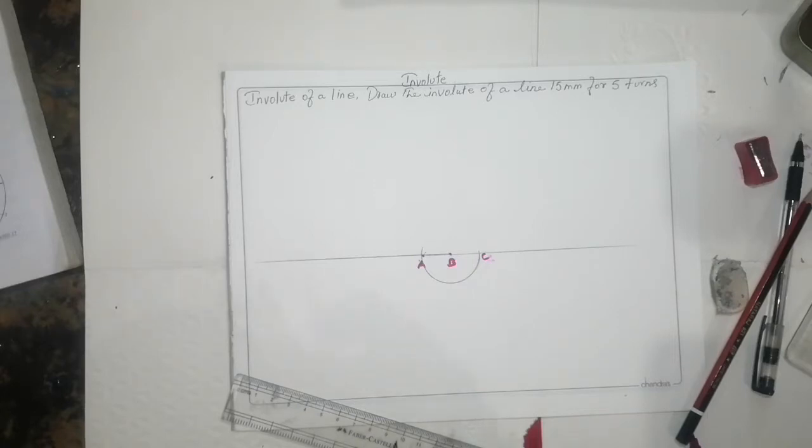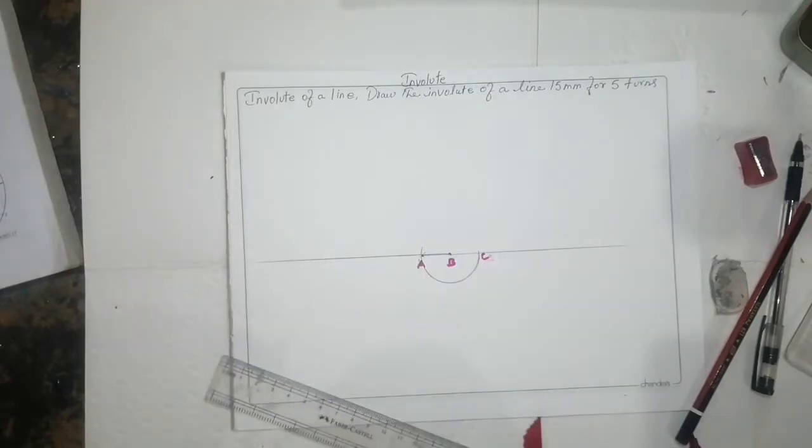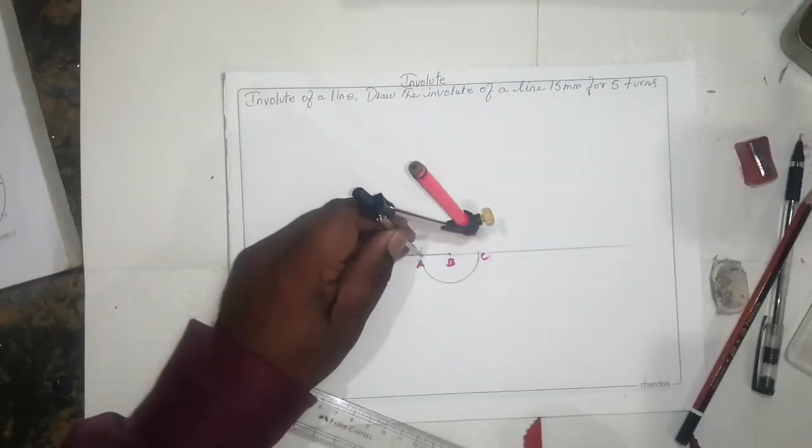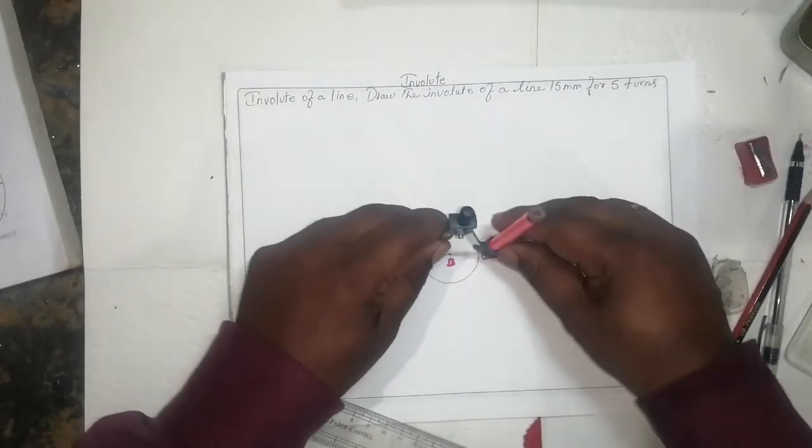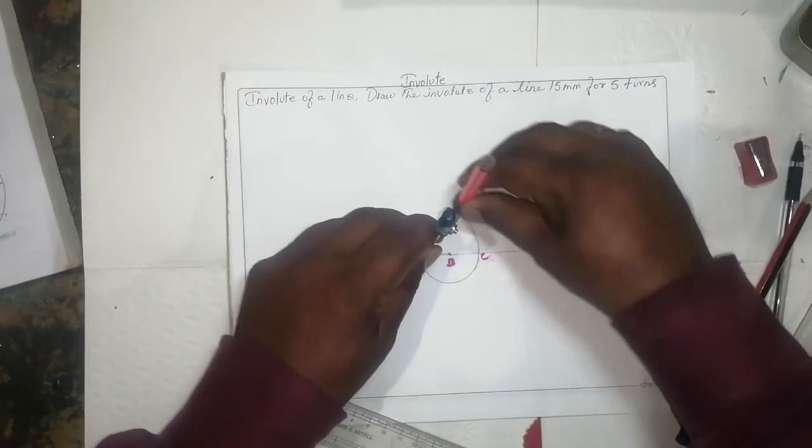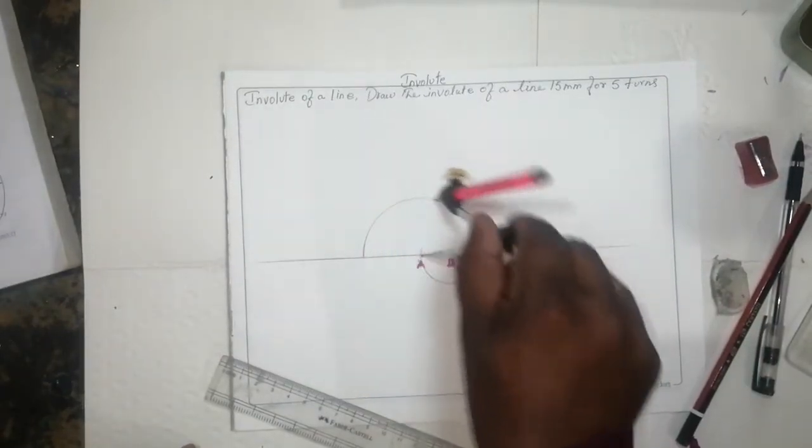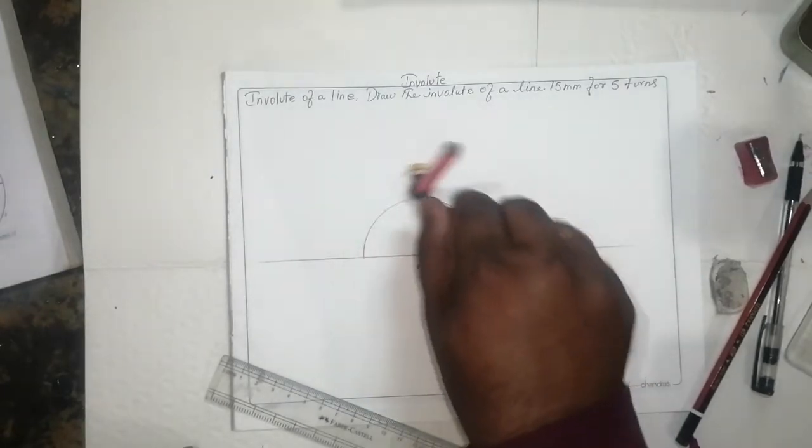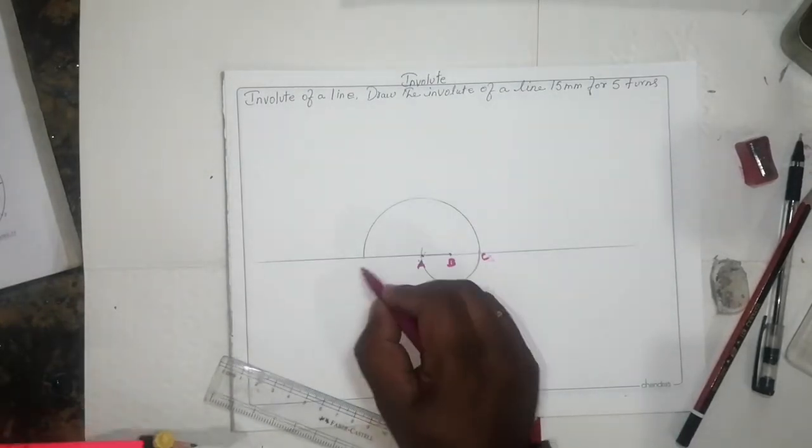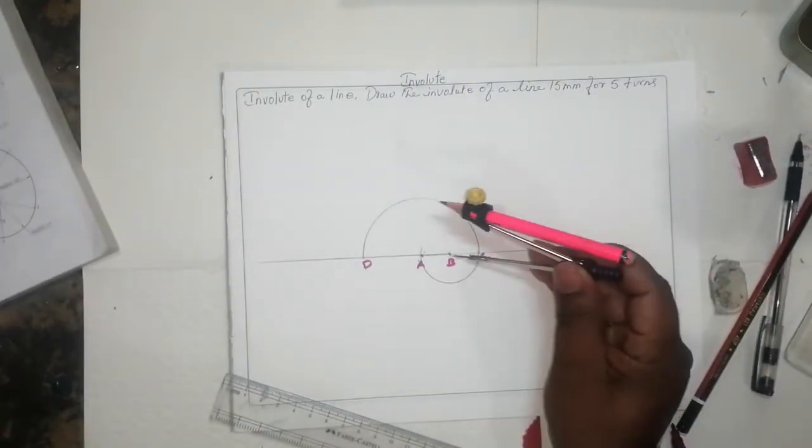After that, take from A to C. Keep in the middle from A to C, draw one circle like this. So you will get D.